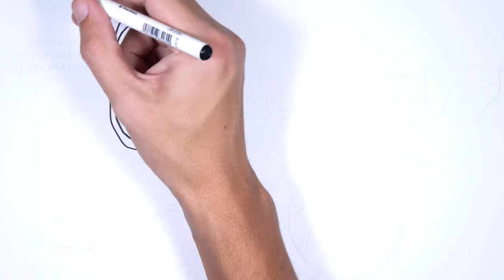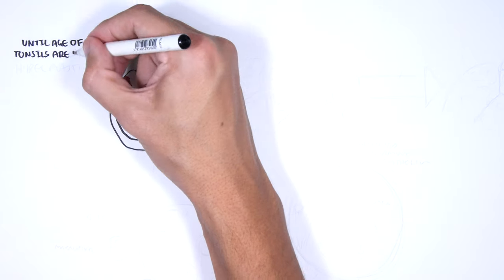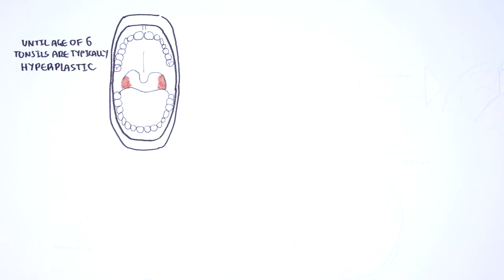The tonsils are important in the early years of life because the lymphoid tissues containing the immune cells are continuously exposed to many antigens. That is why until the age of 6 tonsils are typically hyperplastic and tend to regress by 12 years of age.